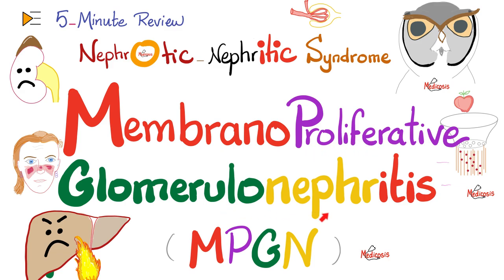Membranoproliferative glomerulonephritis is both nephrotic and nephritic — losing protein in the urine and blood in the urine. Why is this relevant to today's video? Because you can have a genetic disease that presents with both cataract and kidney disease.